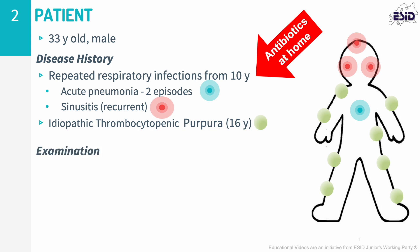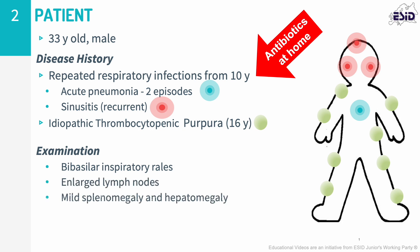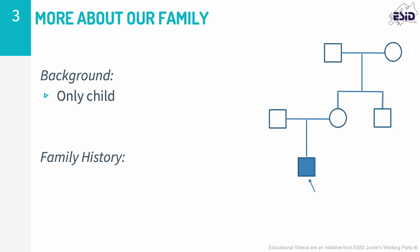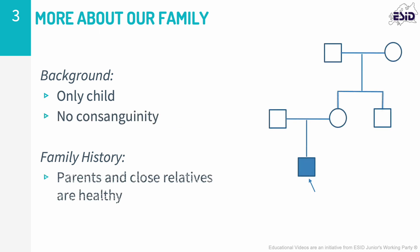Physical examination revealed mild hypoxemia on room air and diffuse fine bibasal respiratory creps. Moreover, lymph nodes were enlarged and there was mild splenomegaly and hepatomegaly. He is an only child and there is no history of recurrent infections from parents or close relatives.